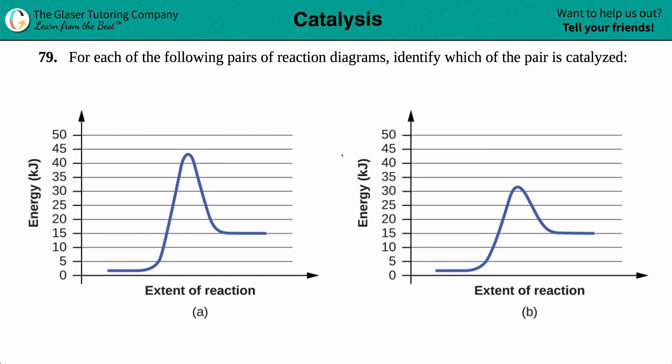Number 79: For each of the following pairs of reaction diagrams, identify which of the pair is catalyzed. We have one pair right here - letter A, this reaction, versus B, this reaction. So out of A and B, we have to figure out which one is catalyzed.